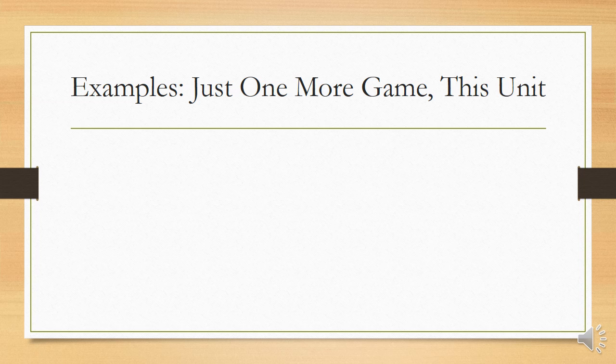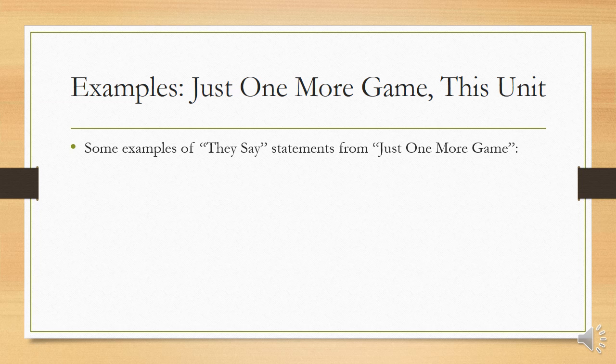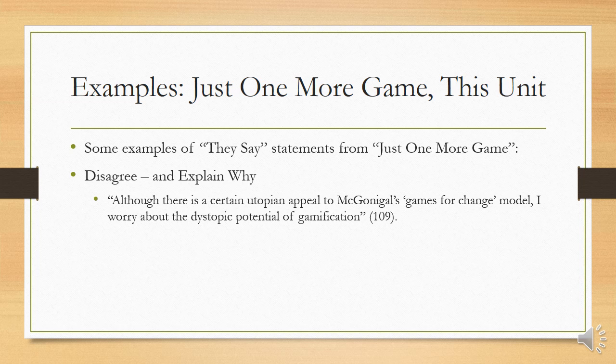For an example this time, we're going to look at Just One More Game again. Since it's not one of the choices for your reading guide, I thought it would be good to use an example from it. Here's an example of a they say statement from Just One More Game — and it's an example of a disagree and explain why statement from those three categories. So here's what he says: 'Although there is a certain utopian appeal to McGonigal's Games for Change model, I worry about the dystopic potential of gamification.'